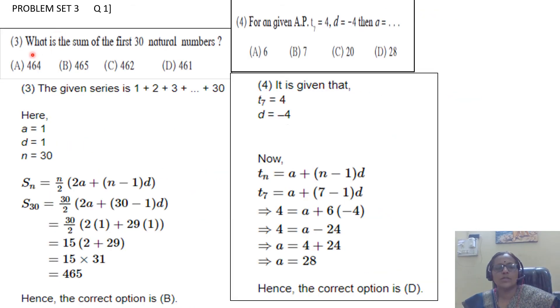Third question: What is the sum of first 30 natural numbers? 1 + 2 + 3 up to 30. First term is 1, common difference is 1, n is 30. So Sn = n/2 × (2a + (n-1)d). S30 = 30/2 × (2(1) + 29(1)) = 15 × 31 = 465. The correct option is B.